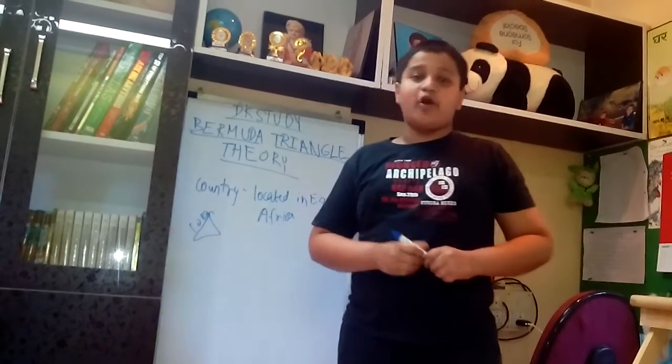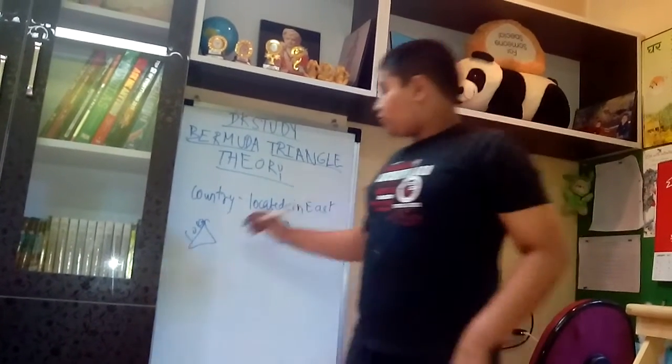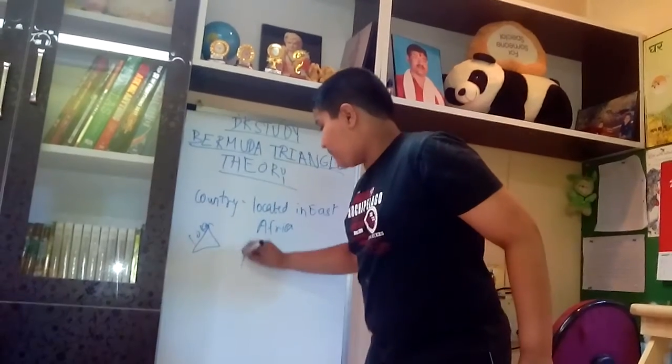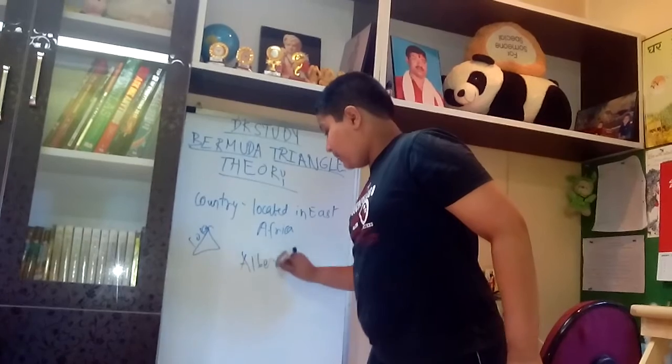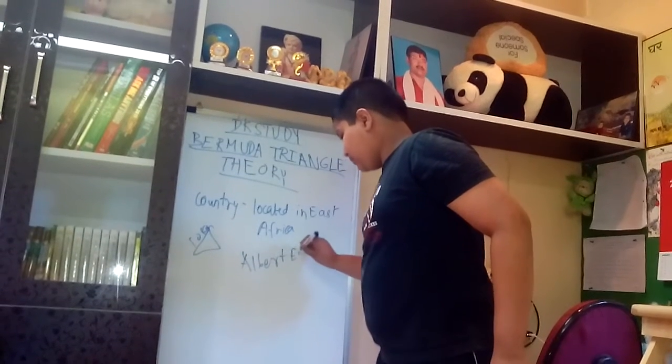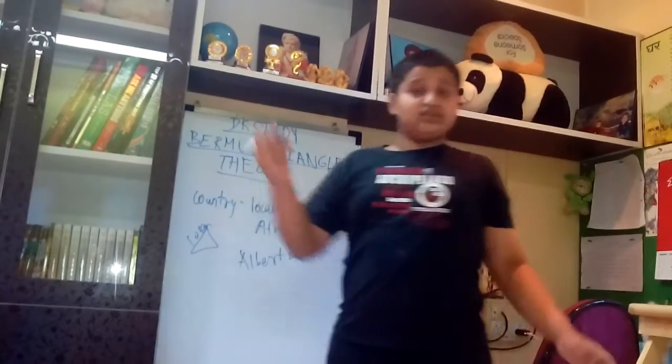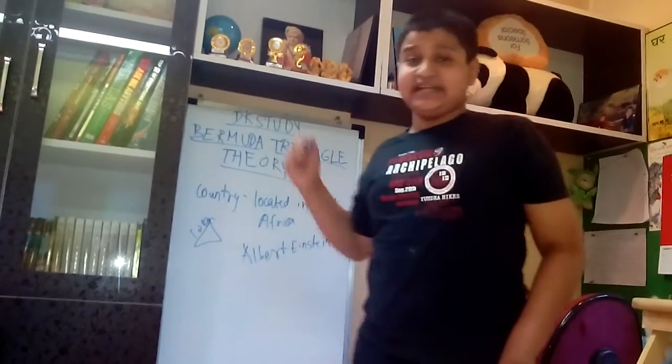So this Bermuda Triangle theory was given by the famous man Albert Einstein. He, as we know, was a scientist, he was a physicist.